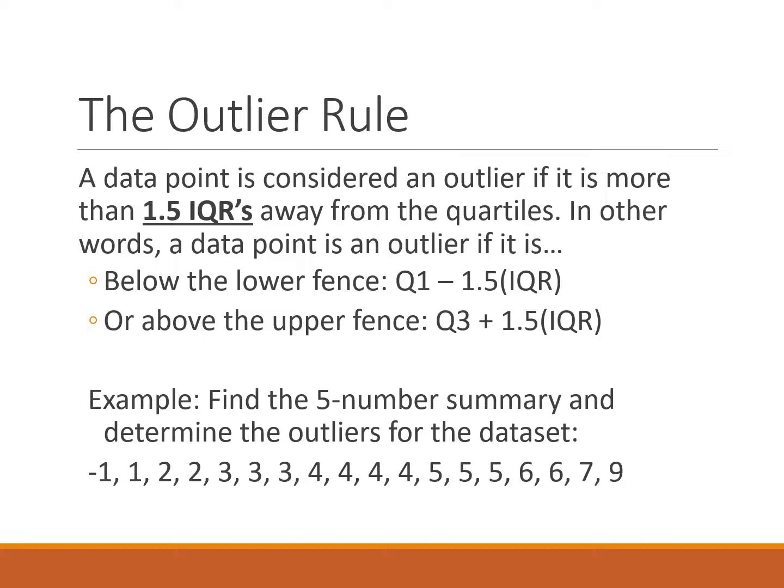For example, if we take quartile one and we subtract one and a half times the IQR, that gives us a value we call the lower fence. If we have any data values in our data set that is below that number, we would identify those as outliers. Similarly, if we took quartile three and we added one and a half times the IQR, that would give us the upper fence and anything above that upper fence would be an outlier.